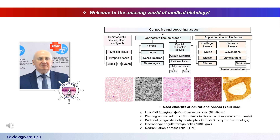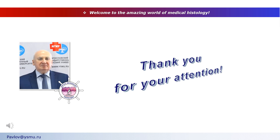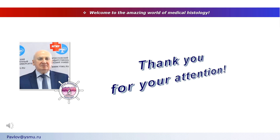In this lecture, we have examined the general properties of the tissues of the internal environment, as well as the structural elements and functions of the main varieties of connective tissues proper. We have evaluated the wide range of differences in the composition and quantity of cells, fibers, and ground substance, which together determine the remarkable diversity of connective tissues under both physiological conditions and in the development of various pathological processes. Stay with us for new meetings on the HISTNAVIGATOR channel.